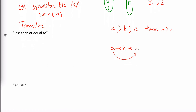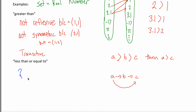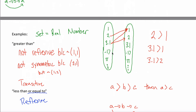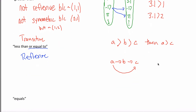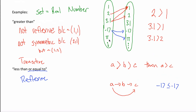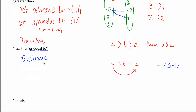What about 'less than or equal to'? Is it going to be reflexive? Yes, this is reflexive — because of the 'or equal to' part. There's an arrow from negative 17 to pi because negative 17 is less than pi. There's also an arrow from negative 17 to negative 17, because negative 17 is less than or equal to negative 17. That's a true statement. And that's true for any element — there's an arrow from 1 to 1 because 1 is less than or equal to 1, from 2 to 2, etc. This relationship is reflexive.